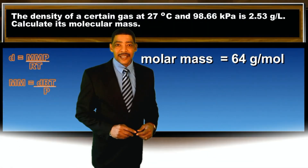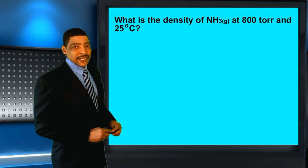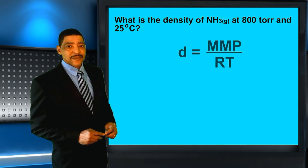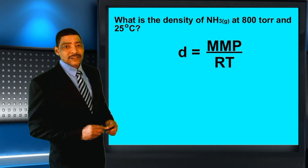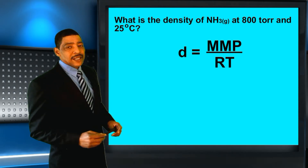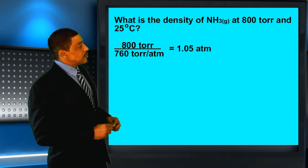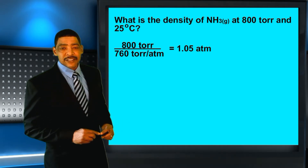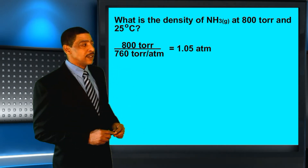Let's end the lesson by calculating the density of a sample of ammonia gas. What is the density of ammonia gas at 300 torr and 25 degrees Celsius? We use the density calculation where density equals molar mass times p divided by r times t. We begin by performing the appropriate conversions. To convert torr to atm, divide: 800 torr divided by 760 torr per atm gives a pressure of 1.05 atm.